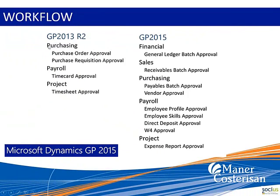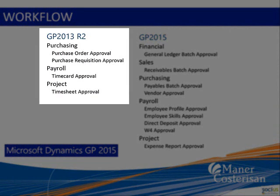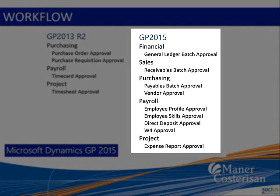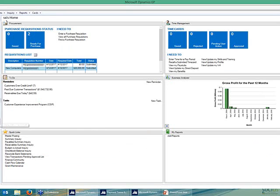Microsoft has done a lot of work around the workflow engine embedded completely into GP. In 2013 R2 they had some basic ones — purchase order approval, a new requisition process, workflows around time cards and time sheets. In 2015 they built on that process: there's now general ledger batch approvals, receivables and payables batch approvals, approvals for adding and modifying vendors, all areas of payroll, and in project accounting any project expense reports that need to be approved also have workflows around them.